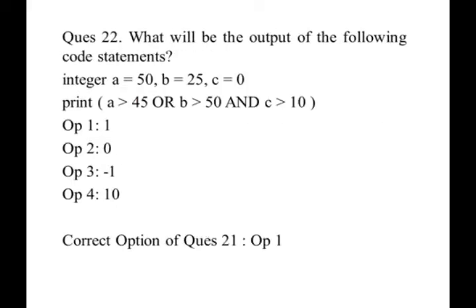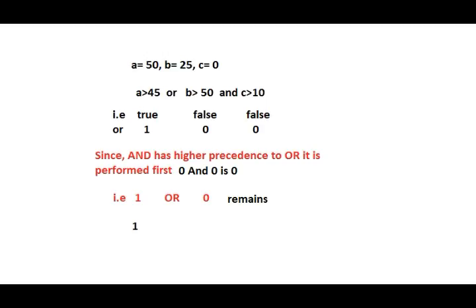This kind of problem on operator precedency we have done before also. Since AND has higher precedence over OR, it will be done first. So 0 and 0 is 0, and then OR is performed. So 1 or 0, we are getting 1.